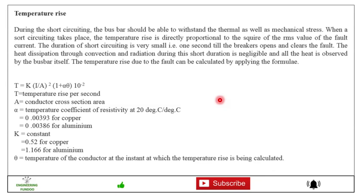So the temperature rise due to the fault can be calculated by applying this formula. Here T is the temperature rise per second, A is the conductor cross section area, alpha is the temperature coefficient, it is 0.003934 for copper, 0.003864 for aluminum. K is the constant 0.52 for copper, 1.166 for aluminum, and theta is temperature of the conductor at the instant at which the temperature rise is being calculated. And by using this formula we can calculate the temperature rise per second for the given busbar.